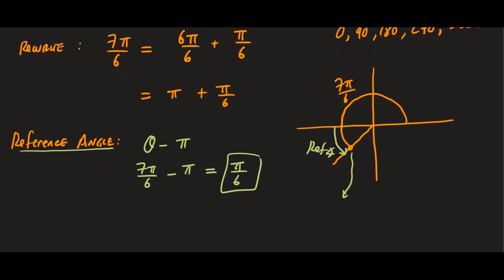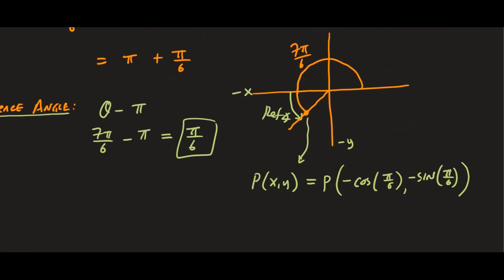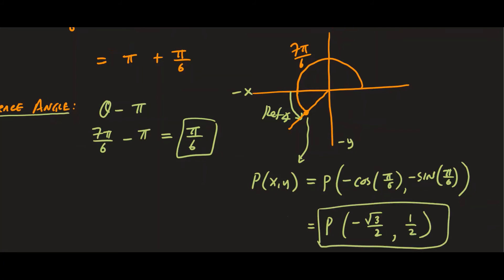The terminal point P(x, y) is given by (cosine, sine) of the reference angle, but because we are in the third quadrant, both x and y are negative. So the point is (−cosine(π/6), −sine(π/6)) = (−√3/2, −1/2). That is the terminal point for the angle 7π/6.